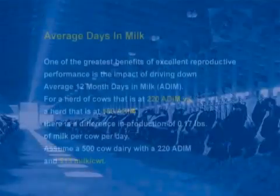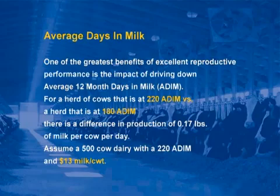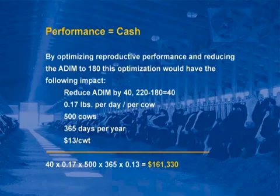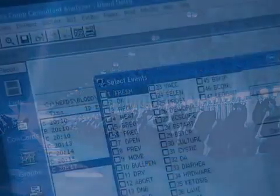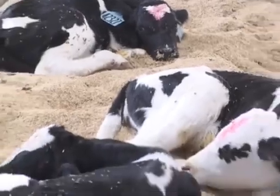As you have heard from these successful progressive dairymen, excellent reproduction performance has a huge impact on management decision making. Improved reproduction performance also impacts the bottom line — cash flow and profit. For example, if we take a 500-cow dairy and lower the days in milk from 220 to 180, the bottom line improves by $160,000 per year. By lowering days in milk to 180, average production per cow will increase by 0.17 pounds per cow per day. This times 500 cows times 365 days, with a milk price of $13 per hundredweight, equals $161,300 in additional milk sales alone. On top of that, we have improved feed efficiency, internal growth, and higher equity value from increased calf inventory.